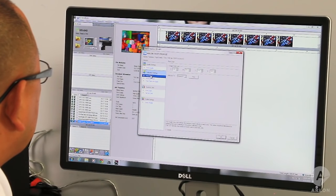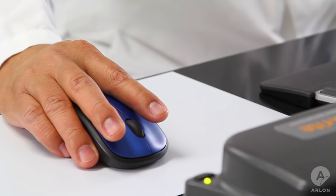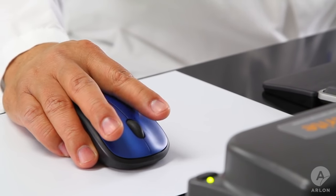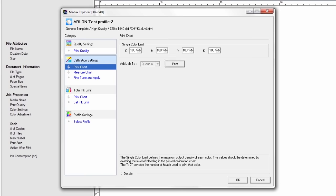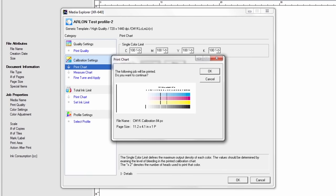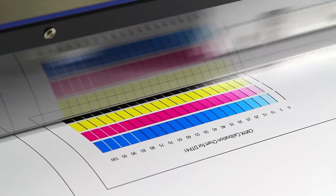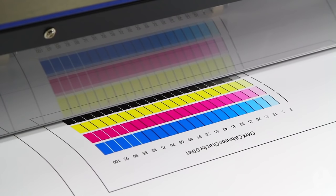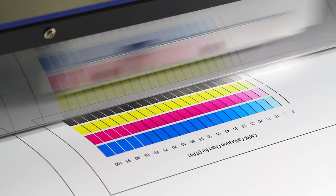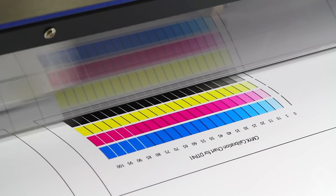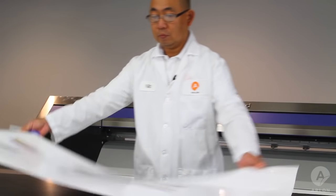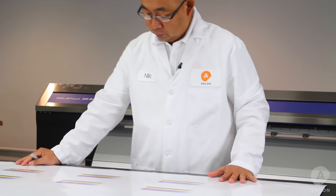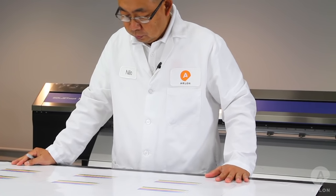Now it's time to determine the ink limit for each color. From the calibration settings, click on print to print the test chart. Printing three across gives you an accurate read across the width of the media.